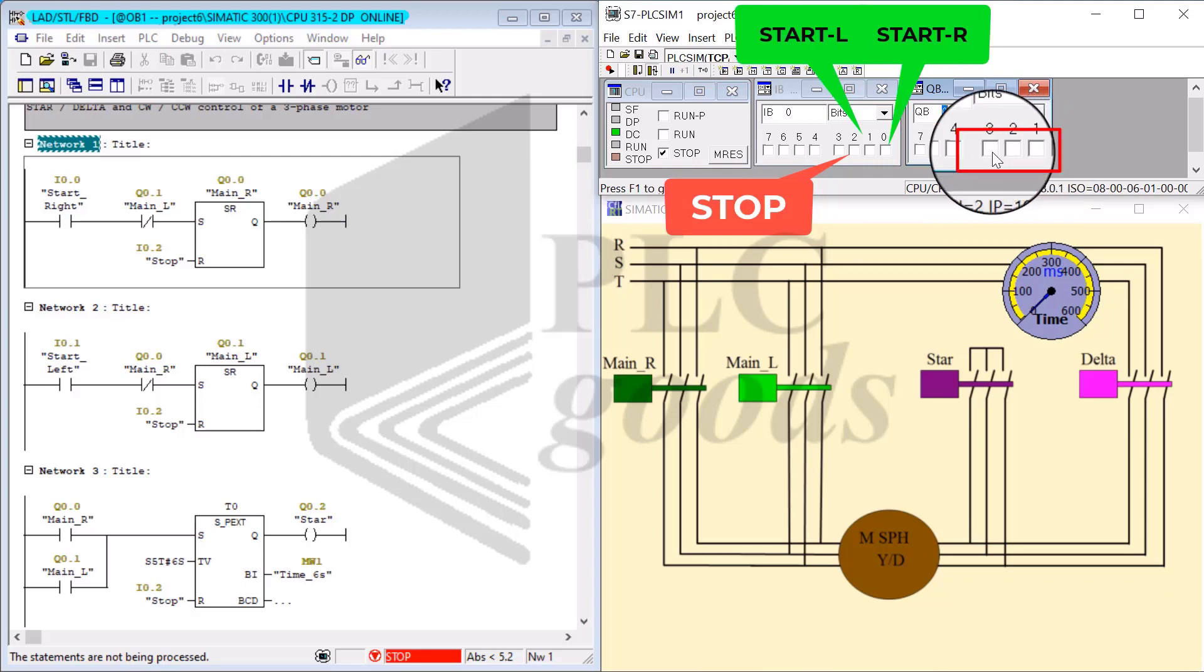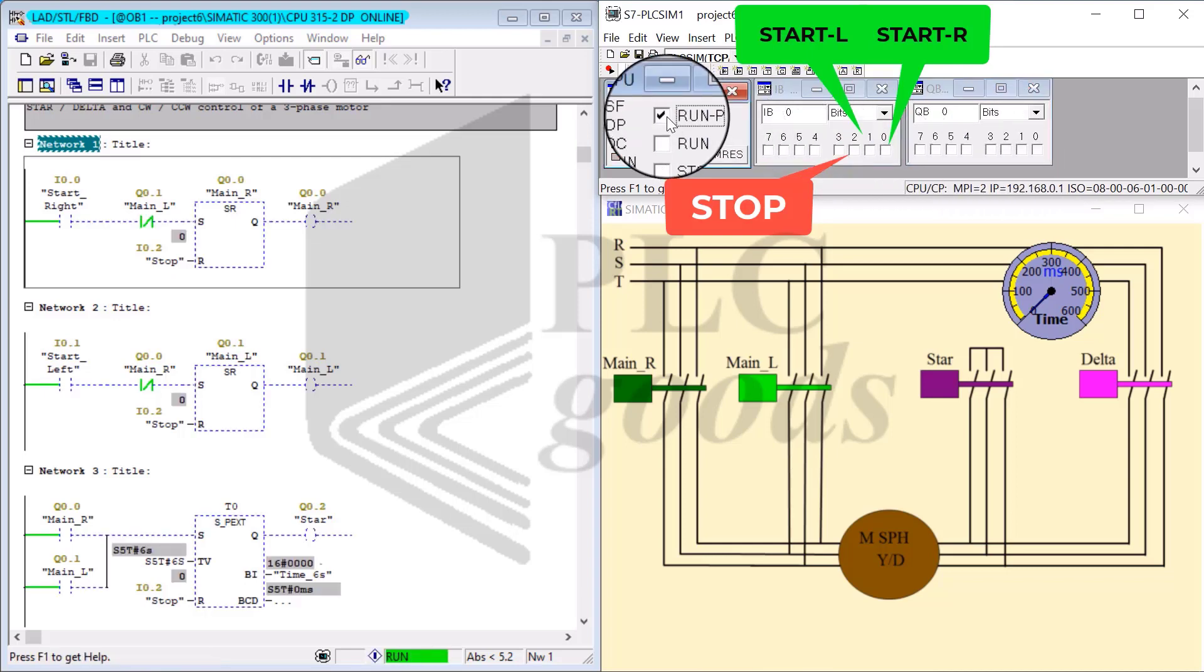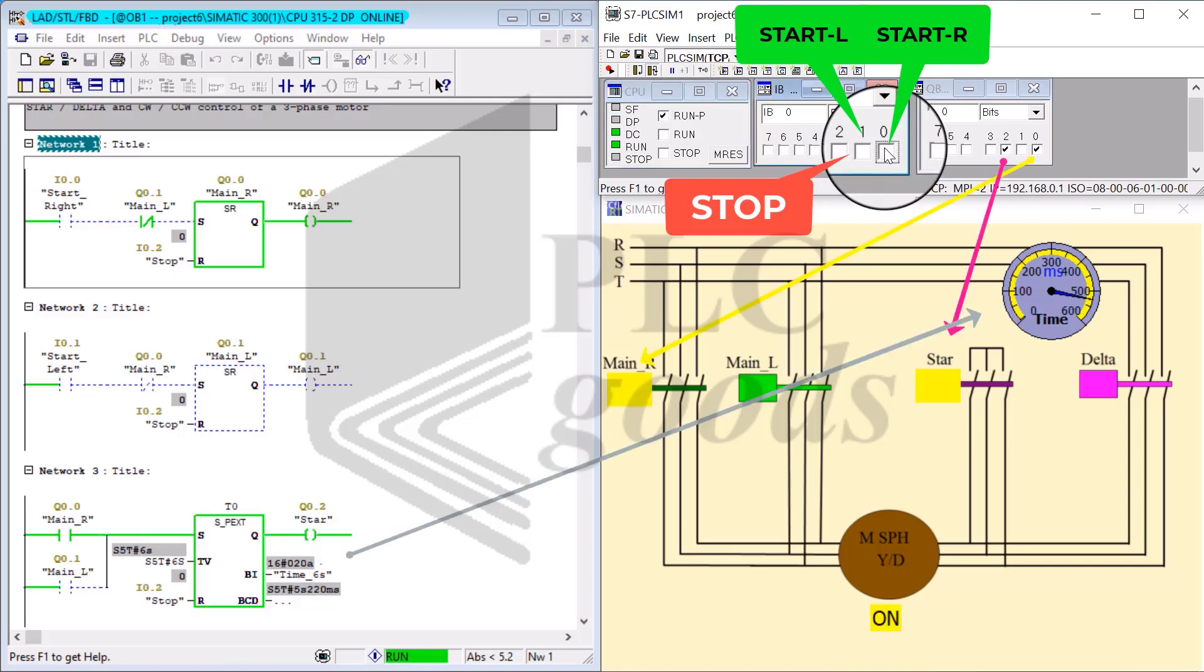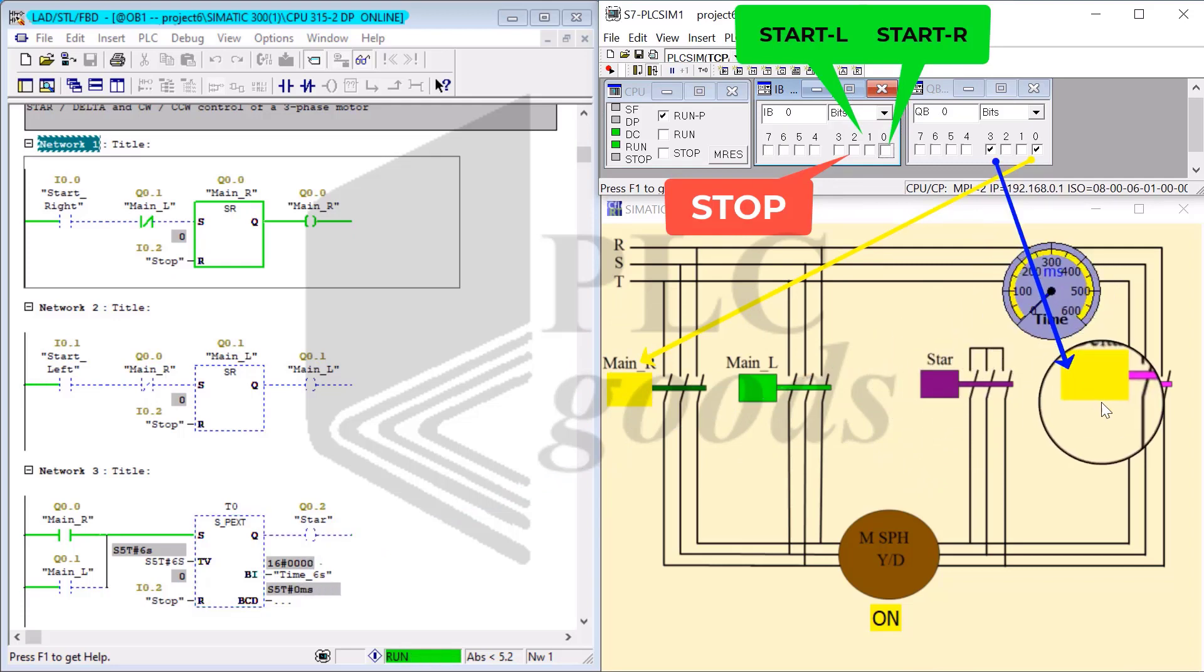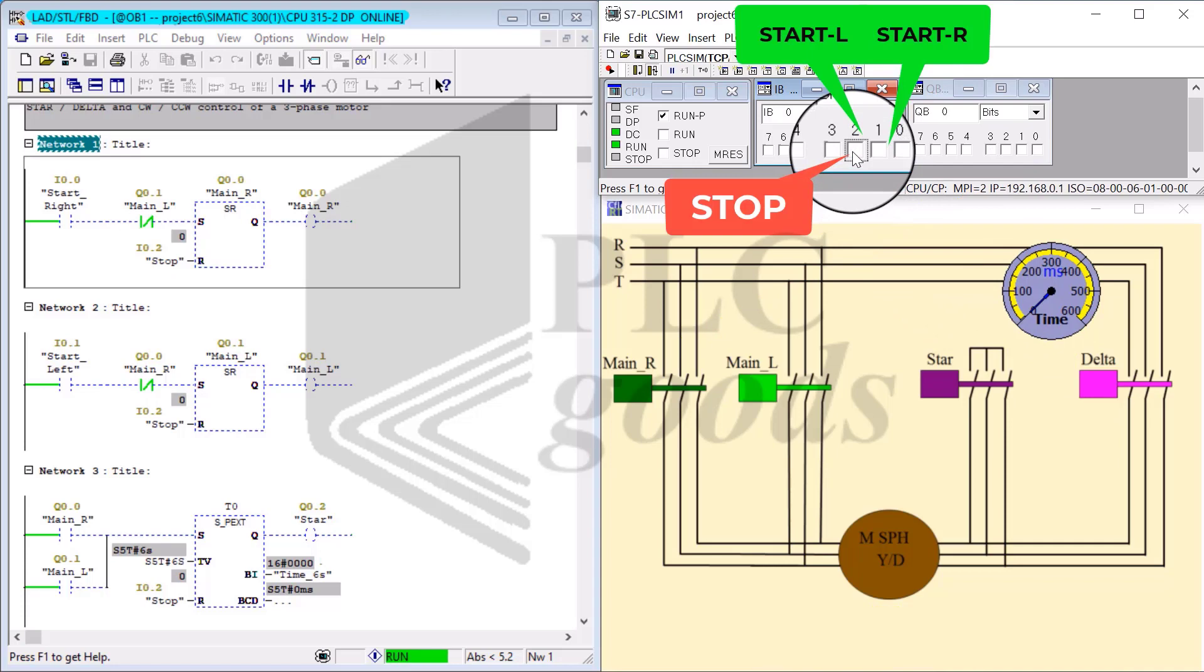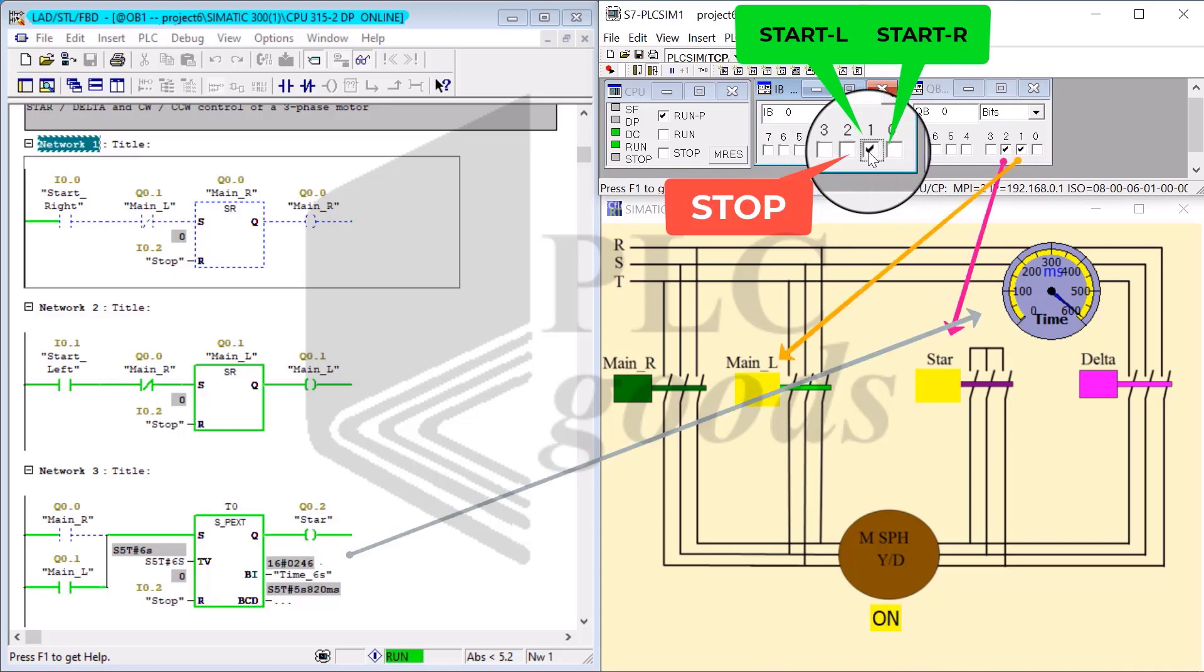I go ahead and turn on the program and tap on the start R. Main R and star first turn on, and after six seconds delta turns on. I go ahead and stop the circuit and tap on the start left. The same happens this time: main left and star turn on, after six seconds delta kicks in.